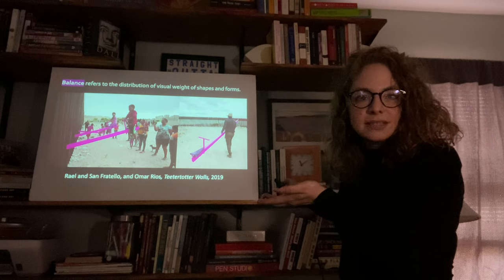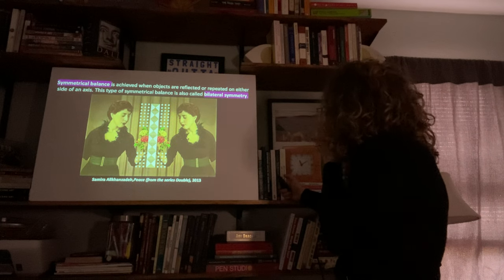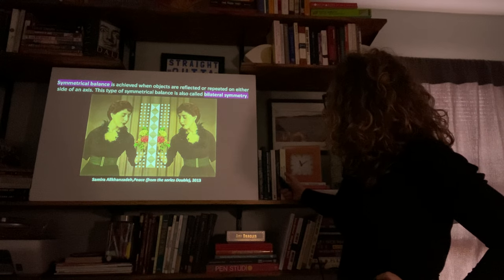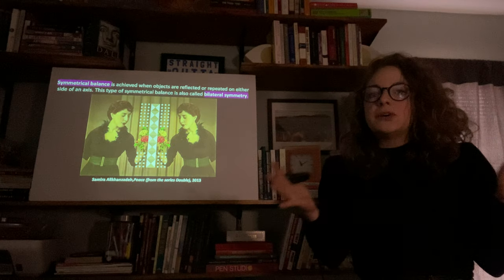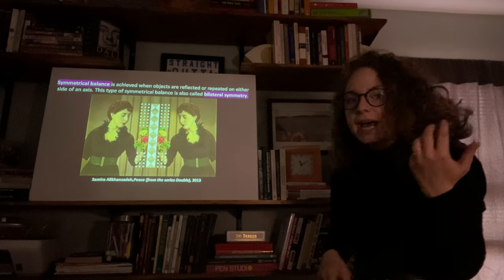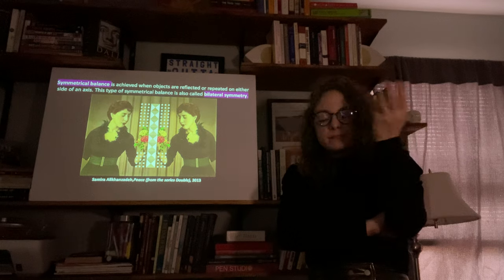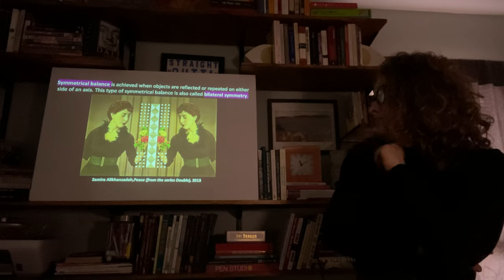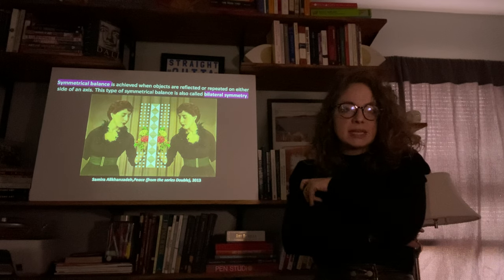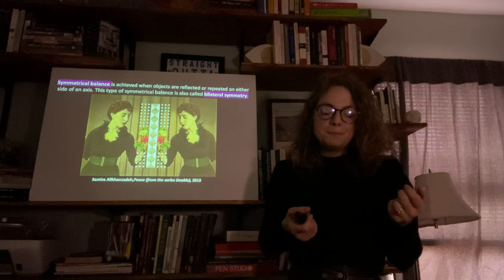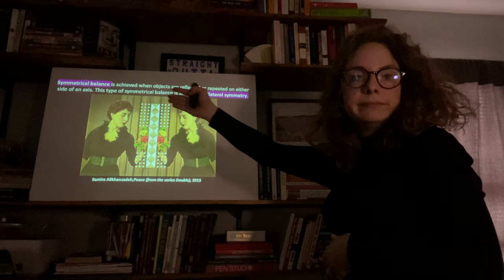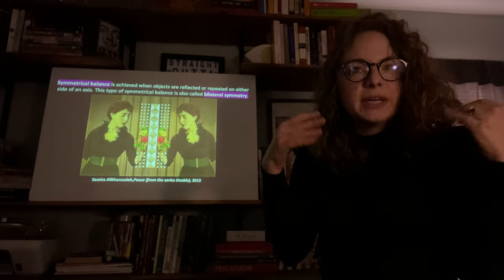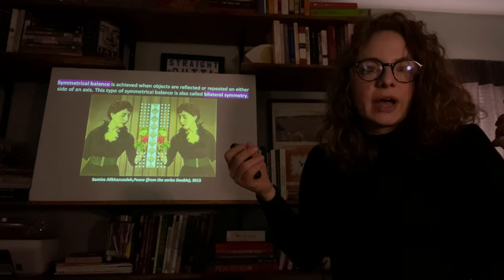There are a few different types of balance. Symmetrical balance is achieved when objects are reflected or repeated on either side of an axis — also called bilateral symmetry. Here we have a work by Samira Alakazende from her series 'Double,' this one called 'Peace.' She uses old photographs that she finds, replicates them symmetrically, and does a lot of work that speaks to the culture shift in Iran when women were no longer required to wear the veil.